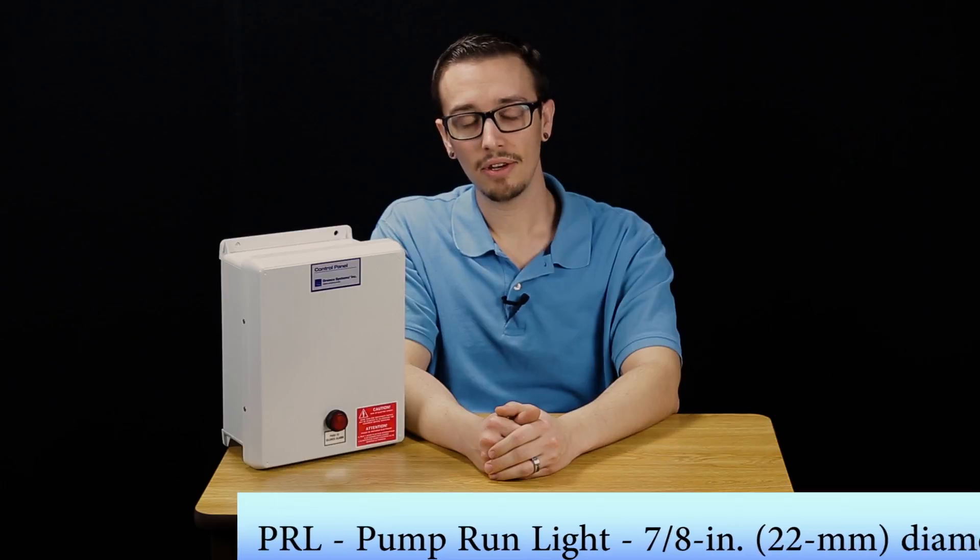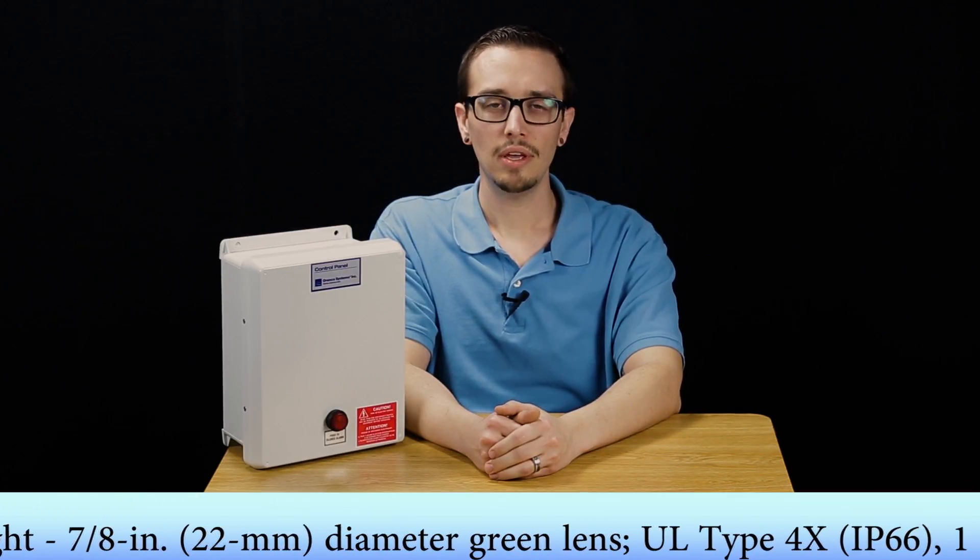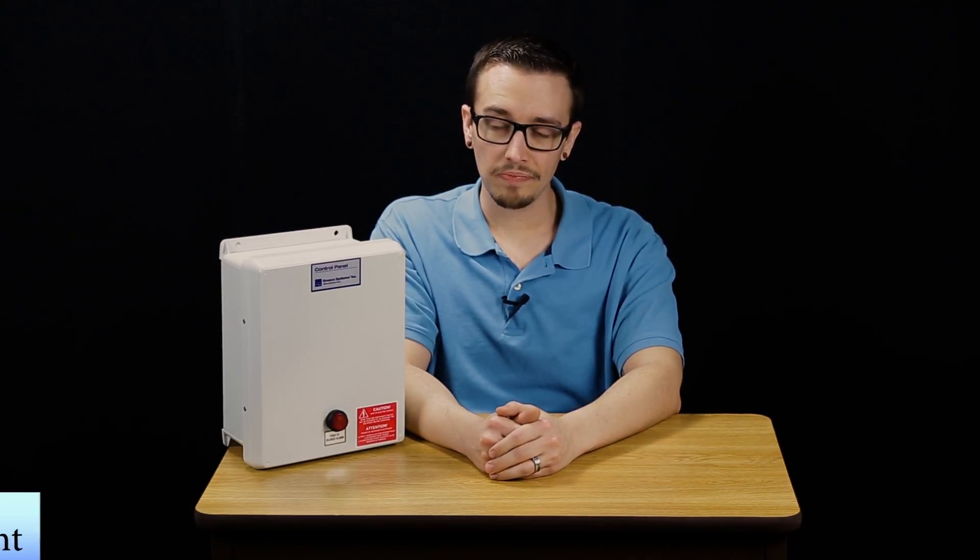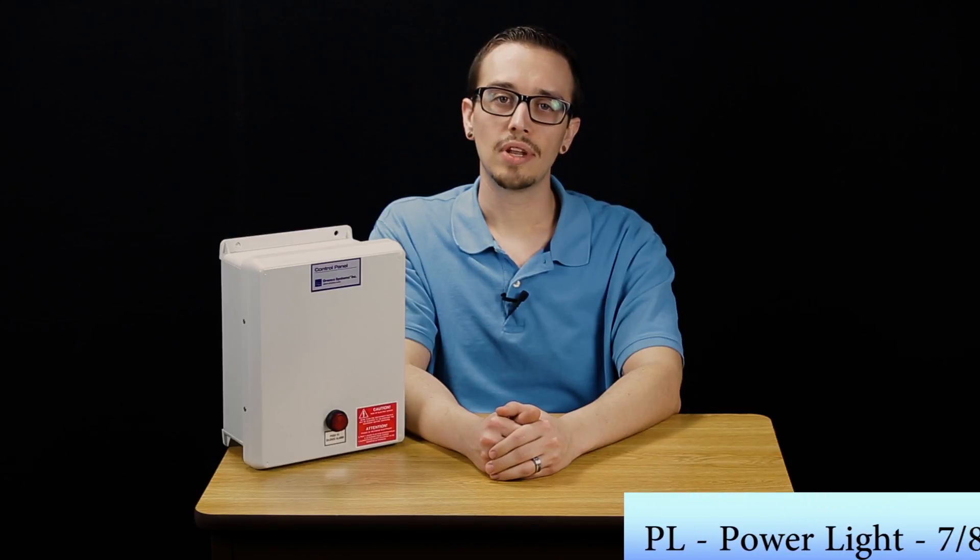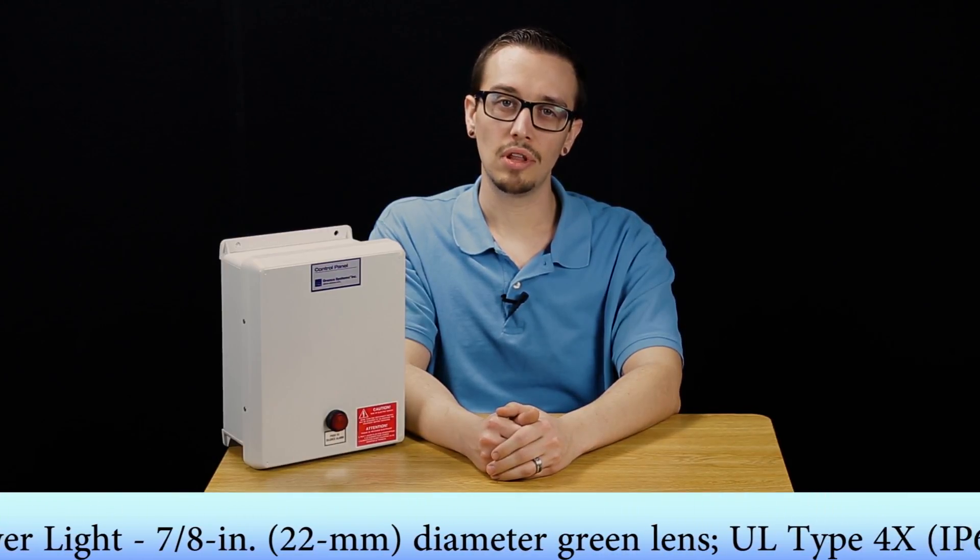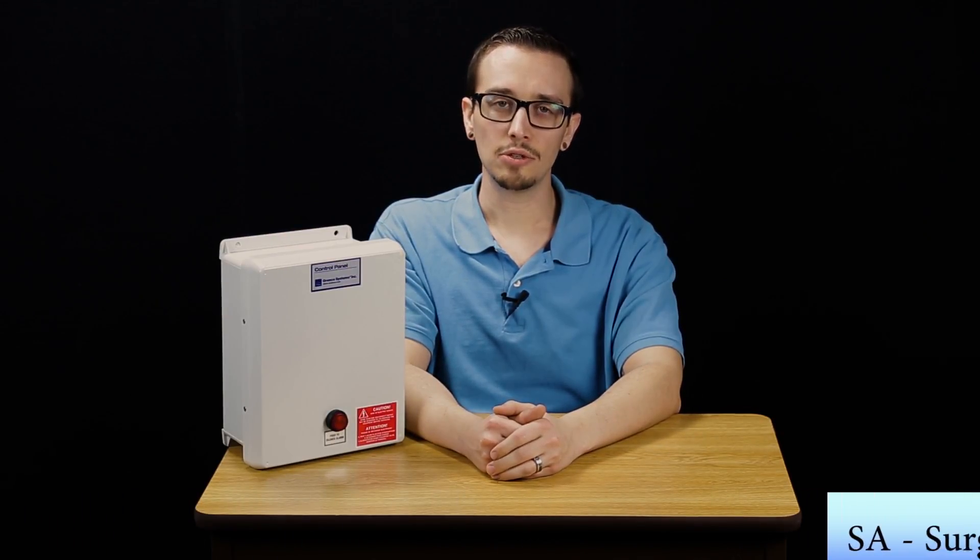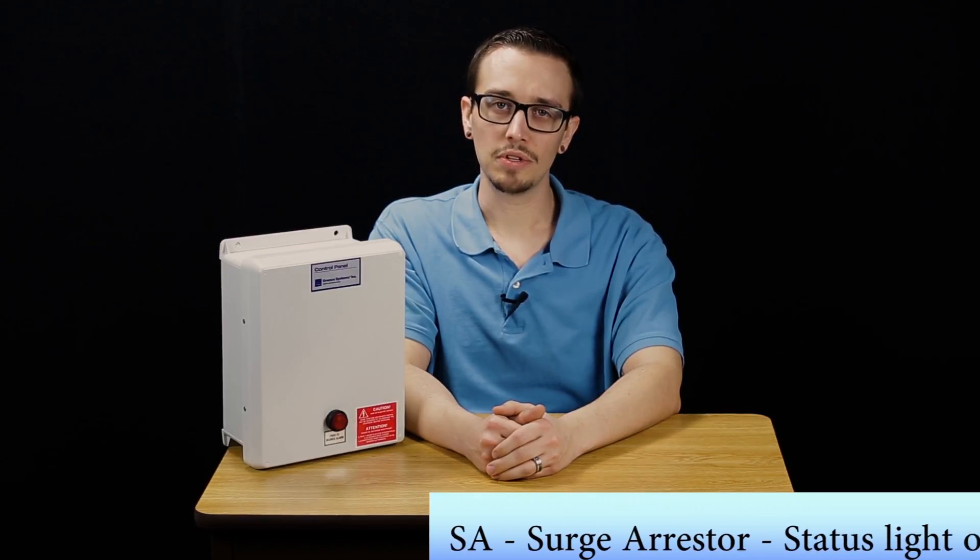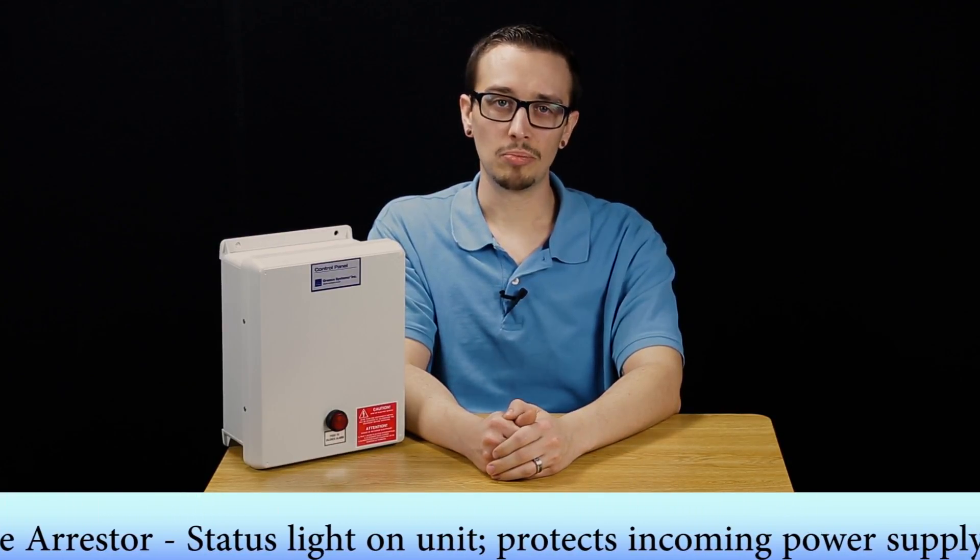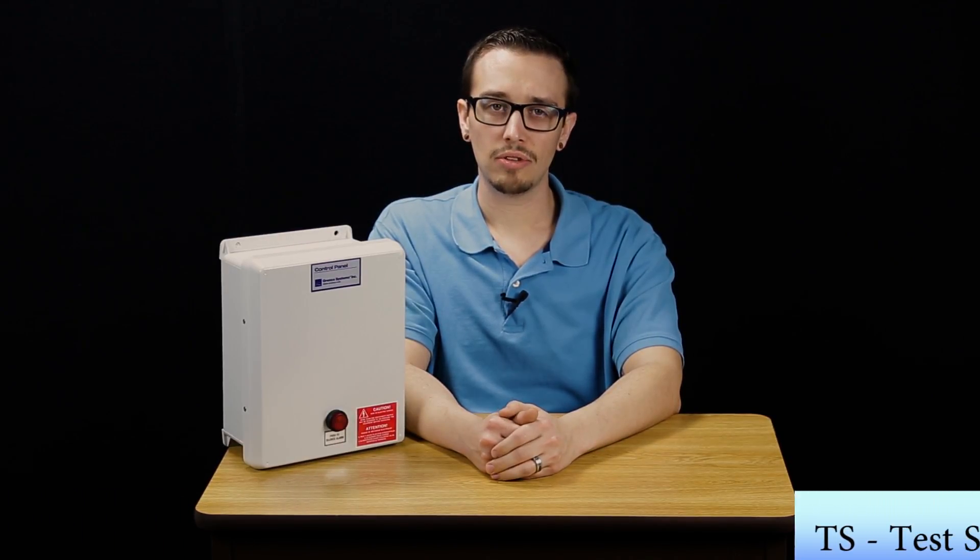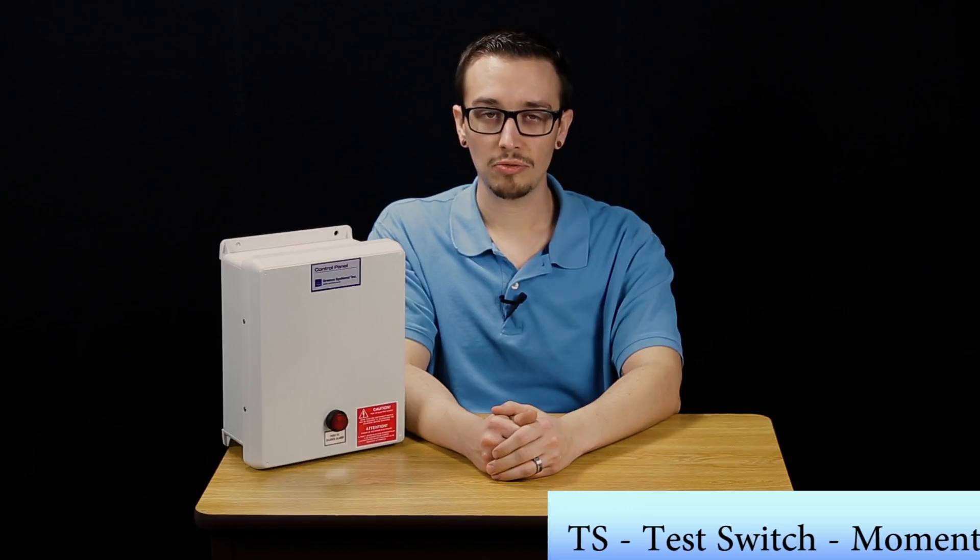Also we have the PRL or pump run light which is just going to give you an indication through a green light on when the pump is actually running and also you can have a power light which is just a light that shows that the panel is actually receiving sufficient power. The surge arrestor is an option with this panel and a surge arrestor simply protects the incoming supply from any electrical surges that occur.